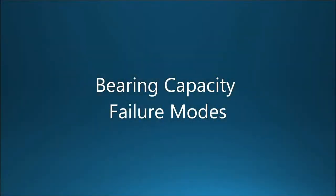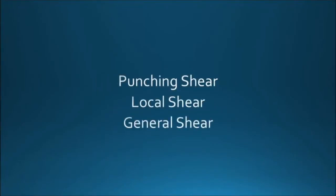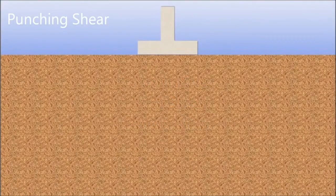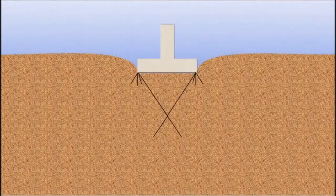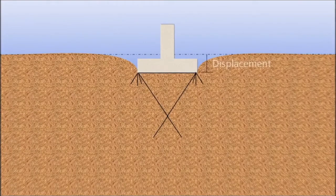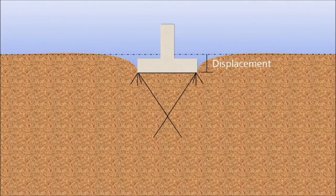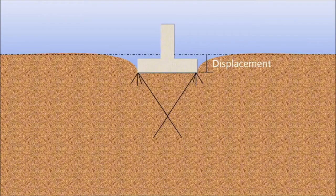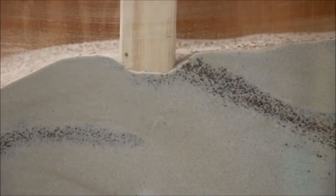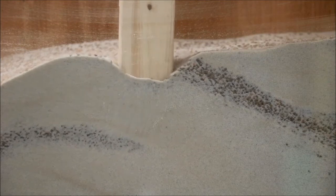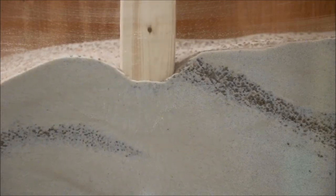There are three types of bearing capacity failures that can occur. One type of failure is punching shear. This generally happens in loose sands, thin layers of strong soil underlain by weak soils, and weak clays which are loaded slowly. Failure develops gradually in the setting due to the high compressibility of the soils. Little to no disturbance is seen at the surface when punching shear occurs, but structures can experience high levels of settlement as you can see in this video.